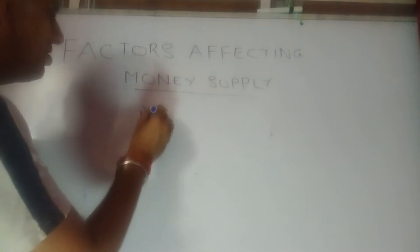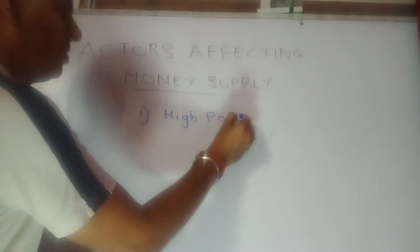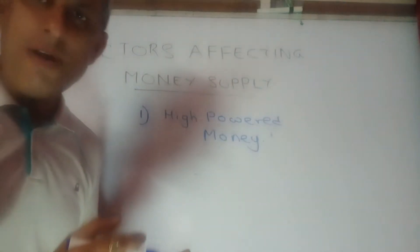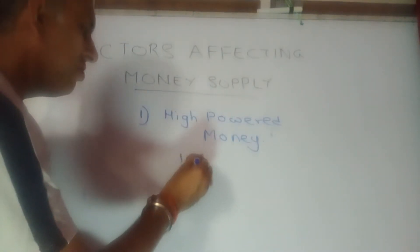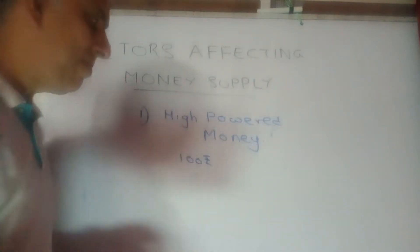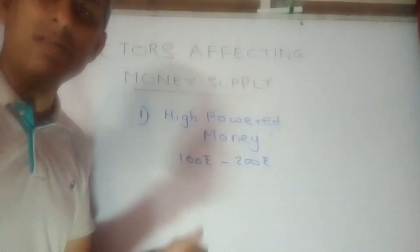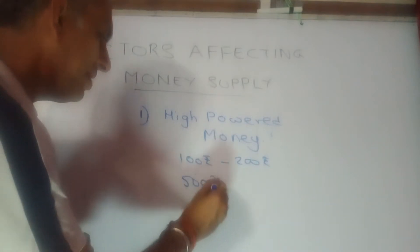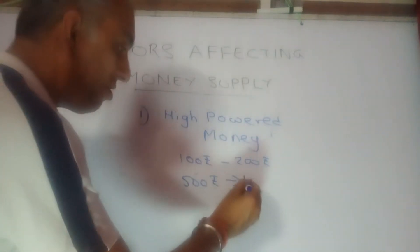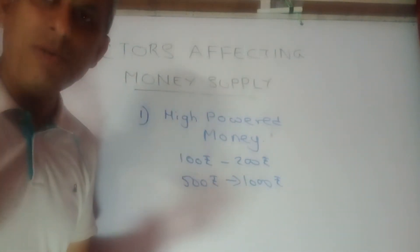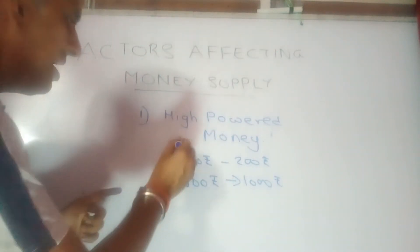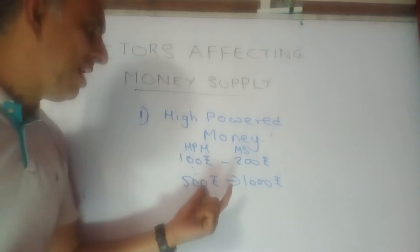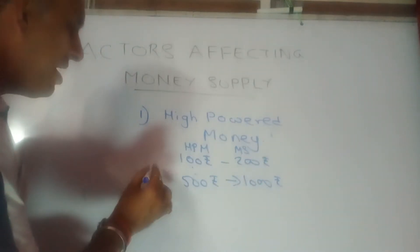The very first factor is the extent or quantity of high powered money, also commonly referred to as HPM. High powered money is what the RBI releases. If RBI releases 100 rupees, through the process of the money multiplier it might turn into 200 or 300 rupees. But if RBI releases 500 rupees as a central bank, there is a strong possibility it may become 1000 or 2000 rupees, depending on other variables.